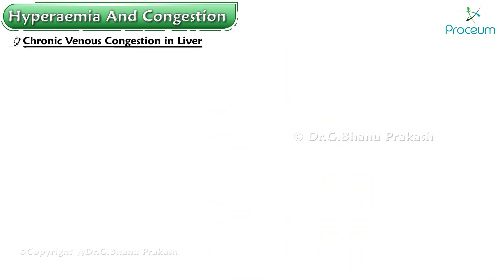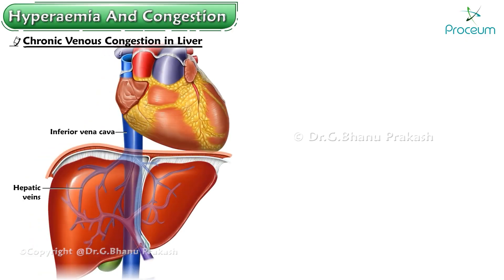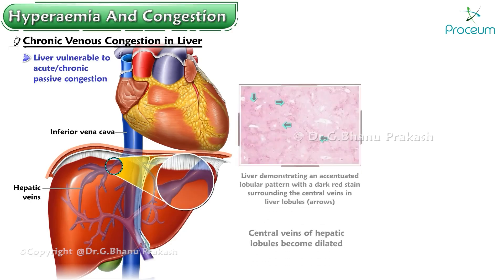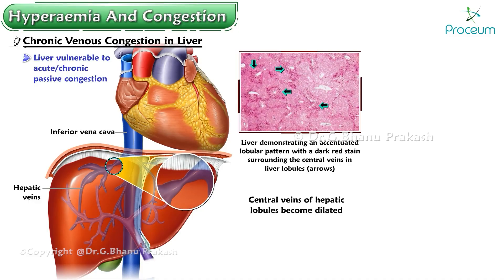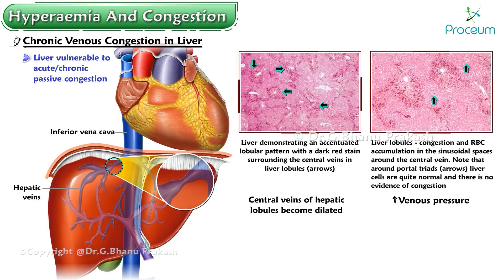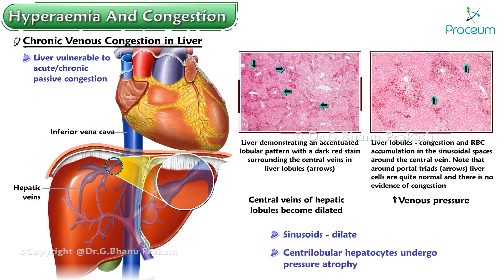In chronic venous congestion of the liver, the hepatic veins empty into the vena cava just inferior to the heart, making the liver particularly vulnerable to acute or chronic passive congestion. The central veins of hepatic lobules become dilated, the increased venous pressure is transmitted to the sinusoids which also dilate, and central lobular hepatocytes undergo pressure atrophy.